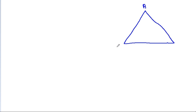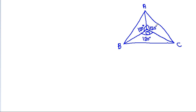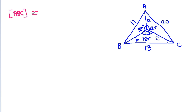So we have triangle ABC with interior point O where all three angles at O are 120 degrees. AO = a, BO = b, CO = c, and AB = 11, BC = 13, AC = 20. Area of ABC equals area of AOB plus area of BOC plus area of COA.